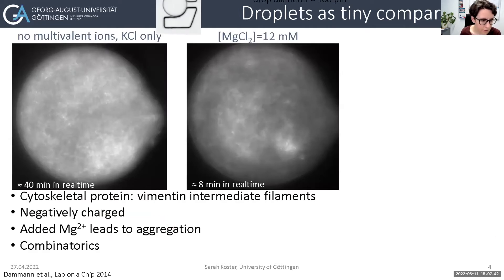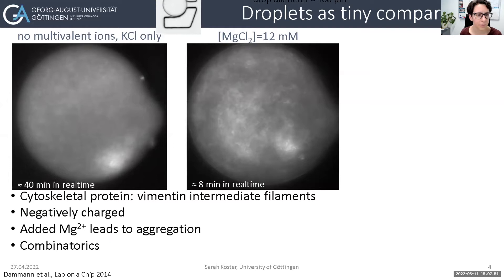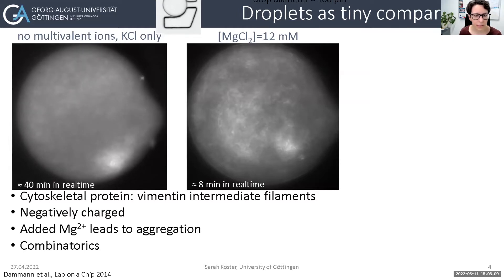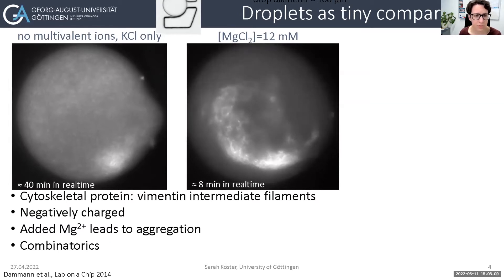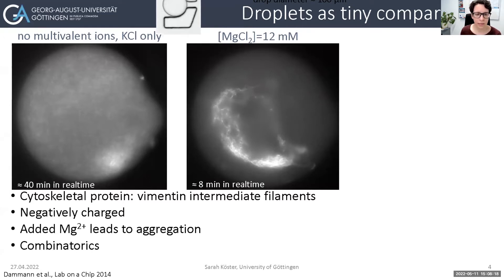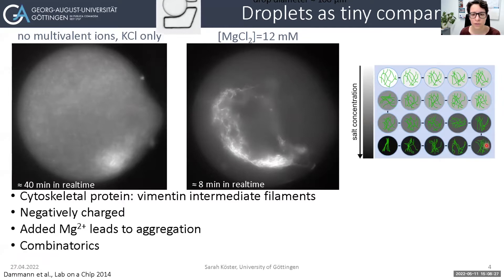Here's a network in a droplet — this is the intermediate filament protein — and what you can see is that it fluctuates around but the network is not really changing over time. When we instead add magnesium chloride, a divalent ion, and the proteins are negatively charged, we see over time that the protein strongly aggregates and we get clusters. This whole movie is eight minutes in real time, so it's a really fast process. Using microfluidics we can do combinatorics: we filled each droplet with a different concentration, giving us lots of different experiments on one chip, and we can compare the different conditions on this microchip.